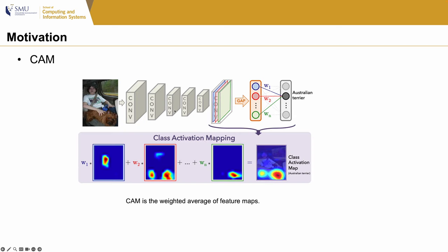Here I will introduce CAM first. It is a simple technique to get the image regions used by a CNN to identify a specific class in the image. It is computed by multiplying the classifier weights with image features, so it can be seen as the weighted average of feature maps. For example, we can use the classifier weights of 'Australian Terrier' on the feature map to get which part of the image is used to recognize that class. In this way, we can get a rough mask of objects.